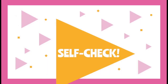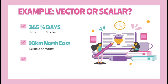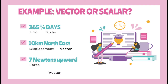Now let's check your understanding. Let us identify which one is a scalar or a vector quantity. 365 and 1/4 days — this measures time, and time is an example of scalar quantity. For 10 kilometers northeast — this describes displacement, and displacement is a vector quantity. 7 newtons upward — 7 newtons describes force, and force is a vector quantity.